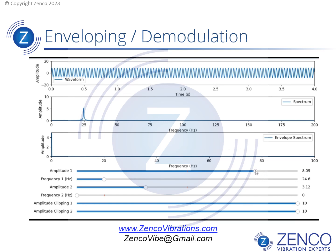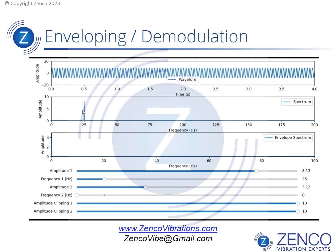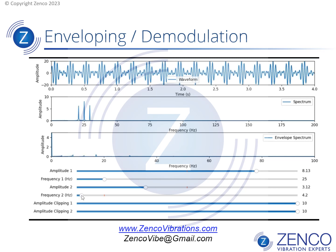Now what I'm going to do is modulate this frequency by another frequency. So I have a wave at 25 hertz, and now I'm going to modulate that — make it get repetitively louder and softer at a rate of about 4 hertz. What you see here is amplitude modulation. In the FFT spectrum, you see sidebands, and the spacing between these and the center peak is the modulating frequency.